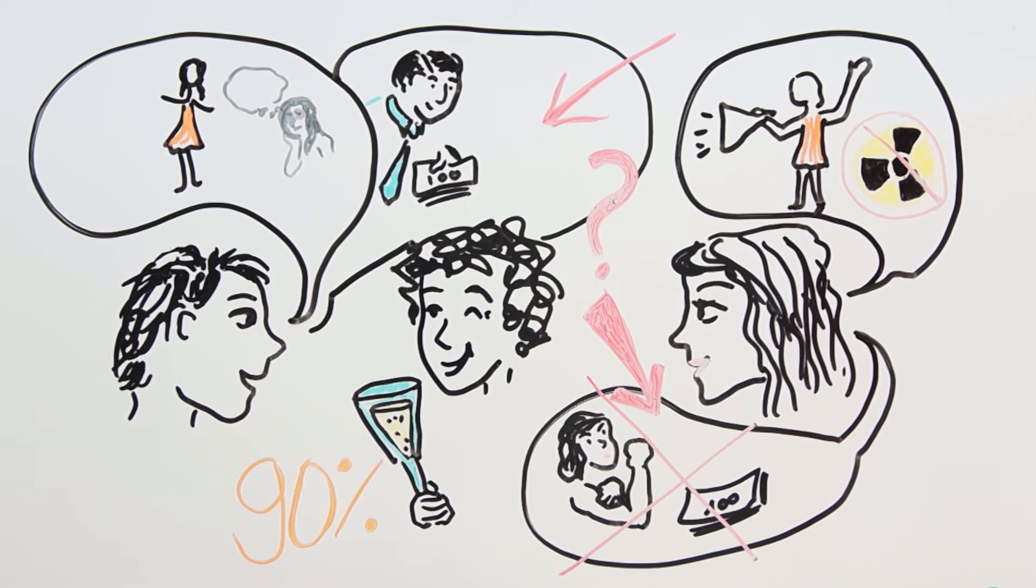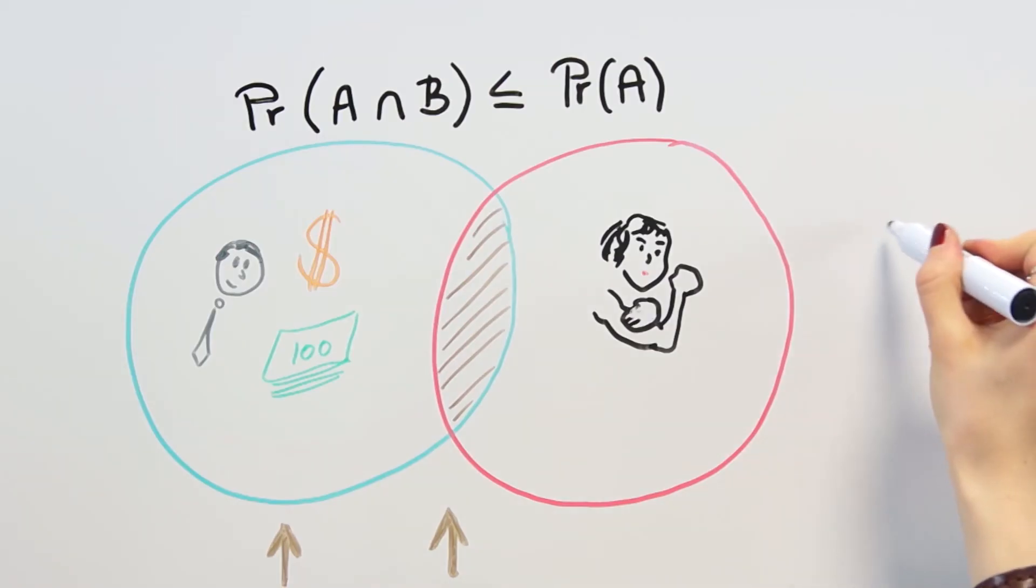It is disputed what to conclude from this experiment. Are people bad at maths? Is it really a reasoning mistake? Or is it just that the word probable can mean multiple things? The mathematical concept? Or a less strict meaning of plausible?